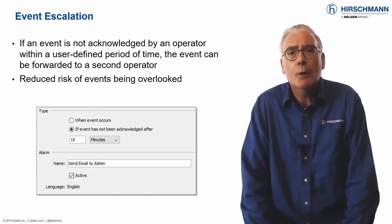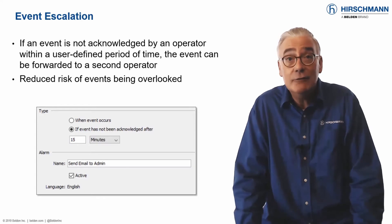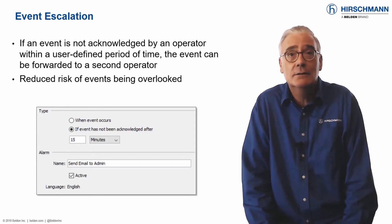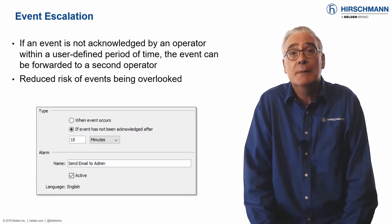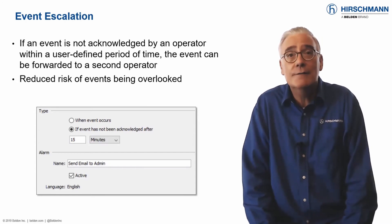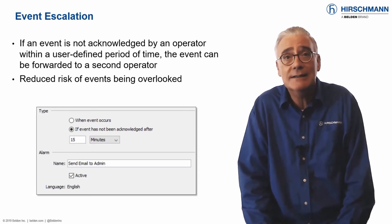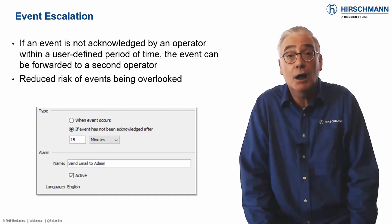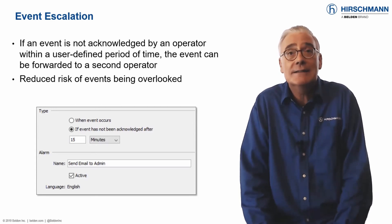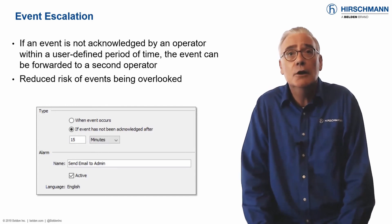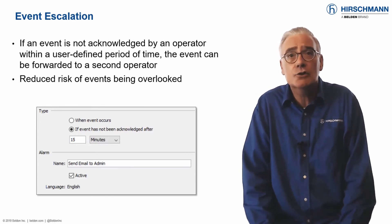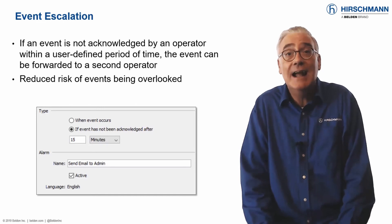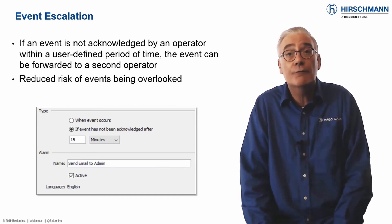In a perfect world, your network operators would see and acknowledge every event. In reality, sometimes the operators will be focused on other tasks and events will get missed. Industrial HiVision offers a simple function to mitigate this problem. Unacknowledged events can be redirected to an alternative operator or escalated to you. You can define the acknowledgement timeout period per alarm — for example, the higher the event severity, the shorter the acknowledgement period. You can also define how each event should be escalated. Event escalation reduces the chances of events being missed and helps you and your colleagues to maintain awareness of the network status.